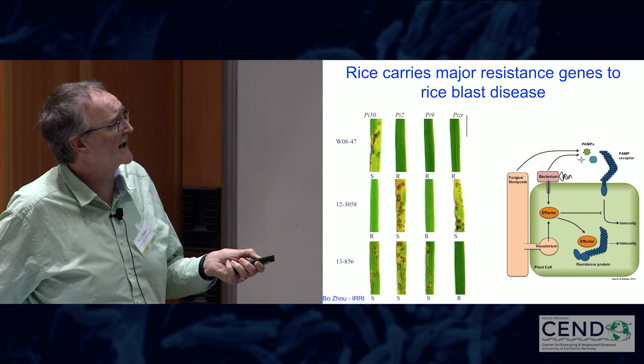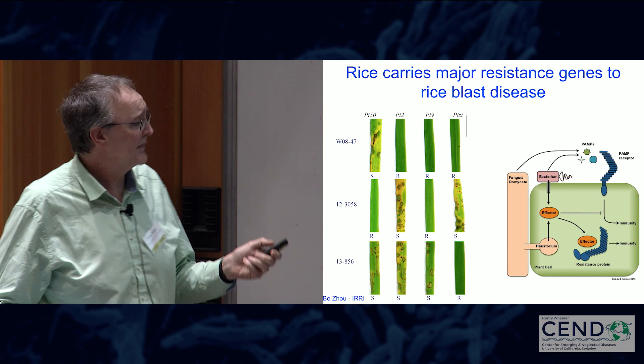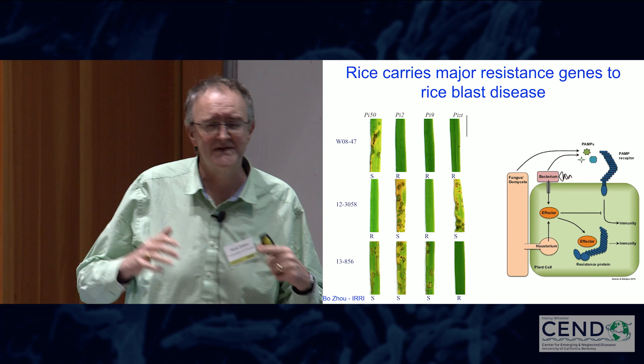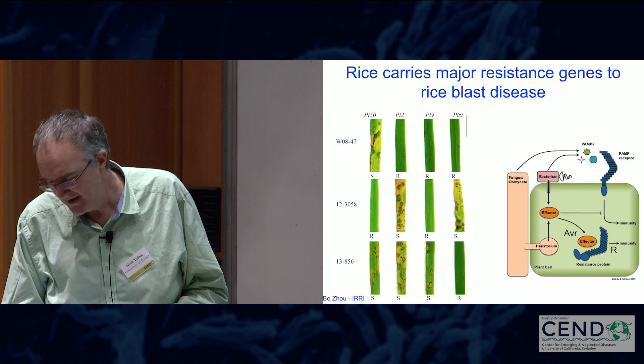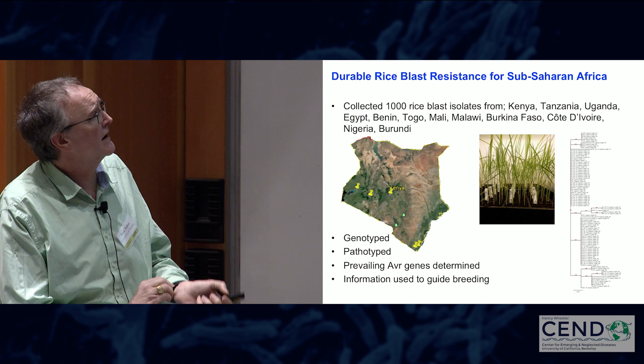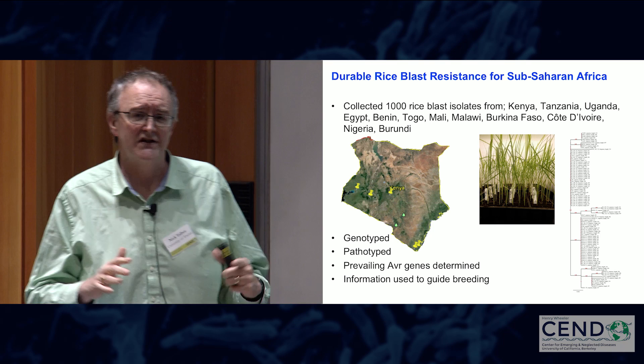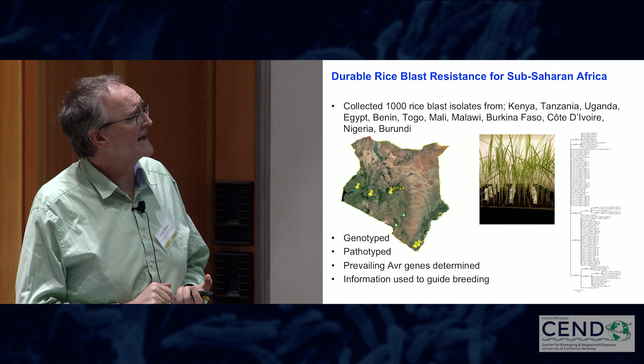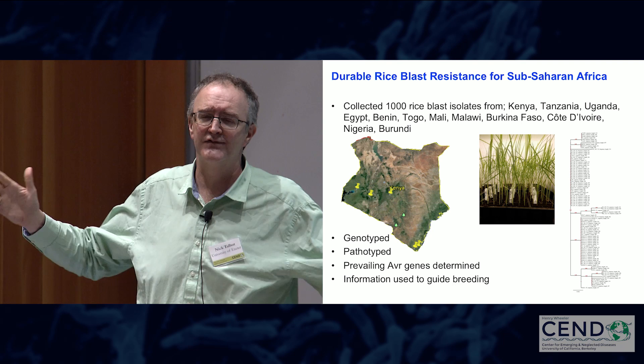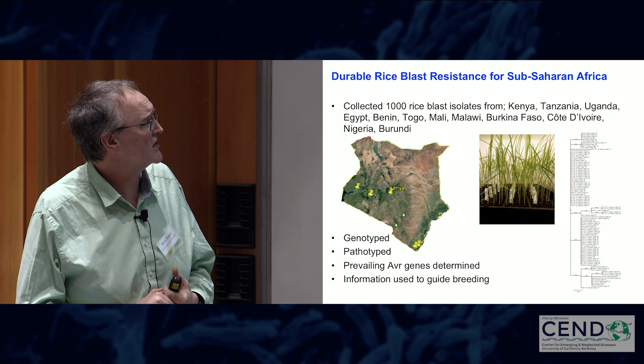We've collected around a thousand rice blast isolates from a whole range of different countries — Kenya, Tanzania, Uganda, and right across Africa — and we've genotyped all of those, sequenced a significant number of them, and pathotyped all of them against the international differential set, which is a near-isogenic series of rice differing by around 30 different disease resistance genes. In that way, we've worked out the prevailing AVR genes present in the population.